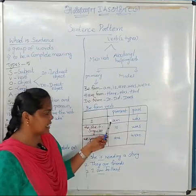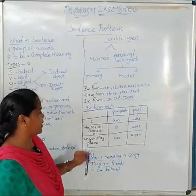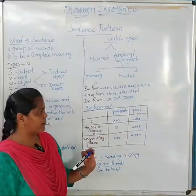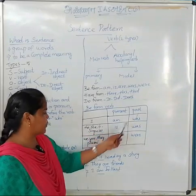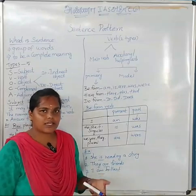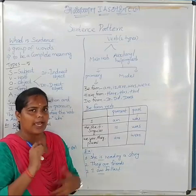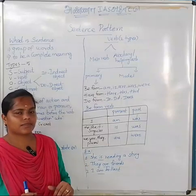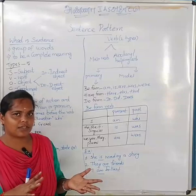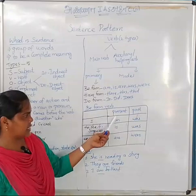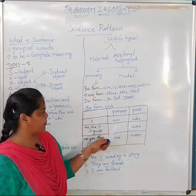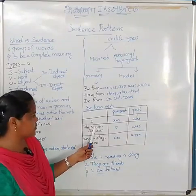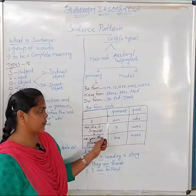In Be form verb, where do you use it in present tense and past tense? In present tense, for 'I', we use 'am.' For example, 'I am a teacher.' In past tense, we use 'was.' For 'he', 'she', 'it' — singular — in present tense we use 'is', in past tense we use 'was.'